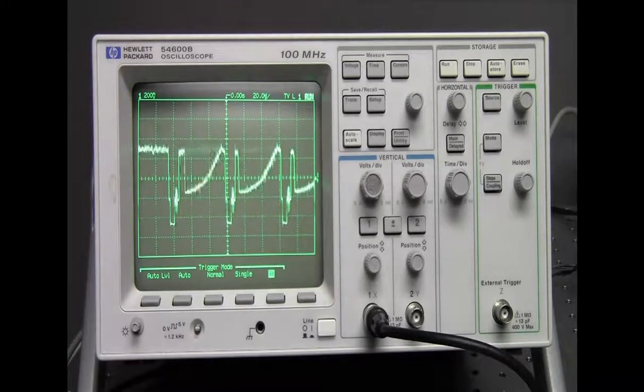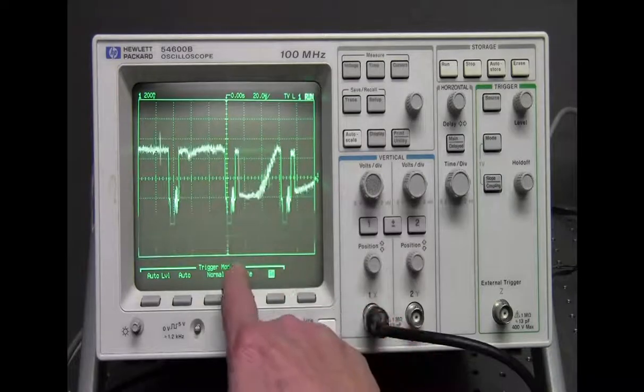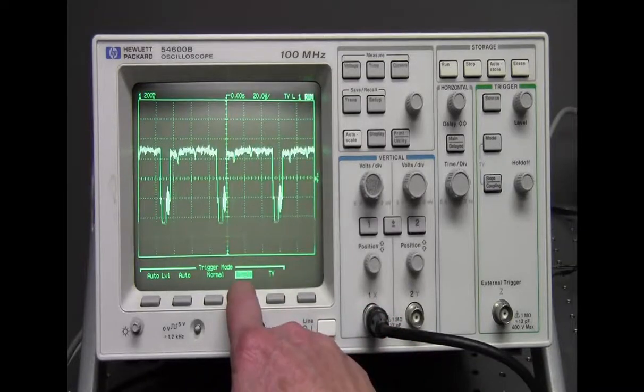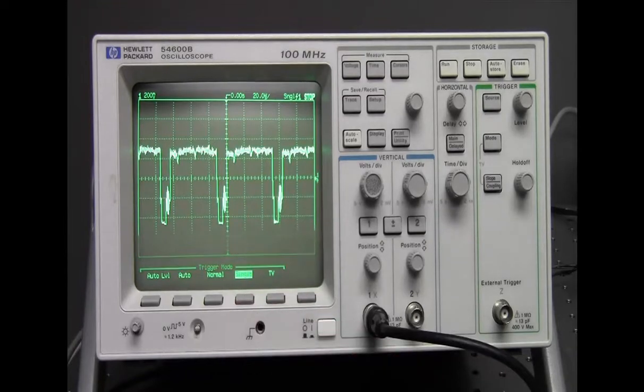We're seeing different parts of the image that are coming through and I have to capture it. So I'm going to hit single, which is a single frame that it's capturing. We have to cycle through the different parts of what the camera is sending and the oscilloscope is receiving.